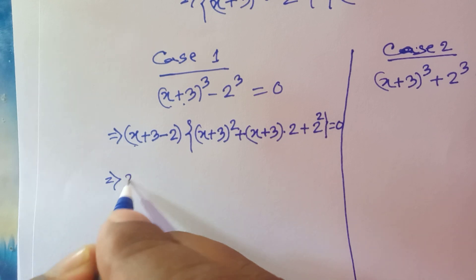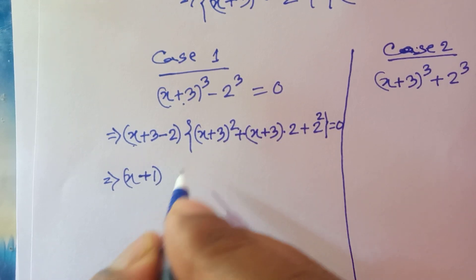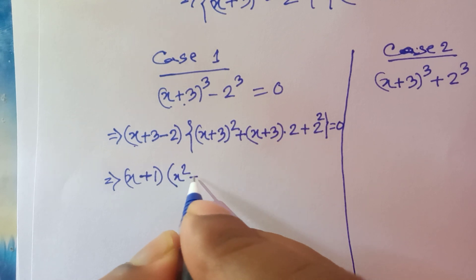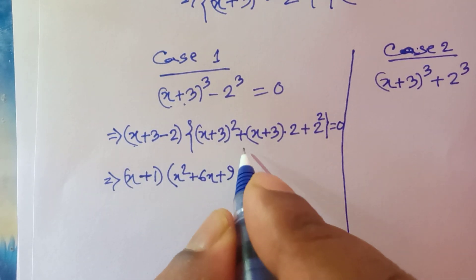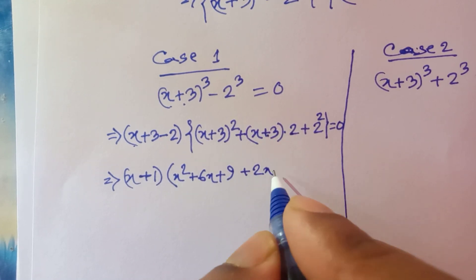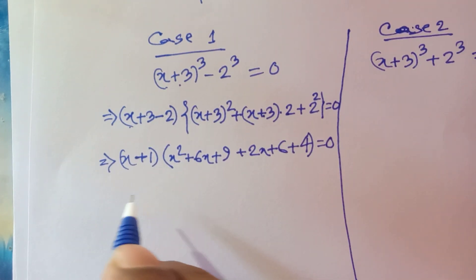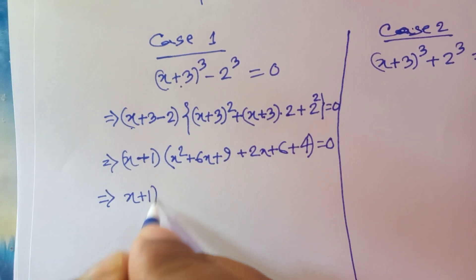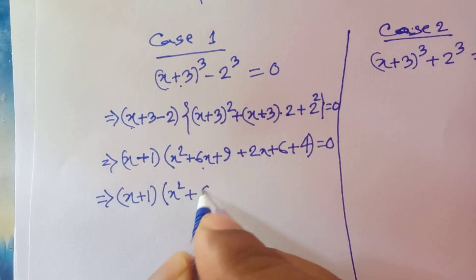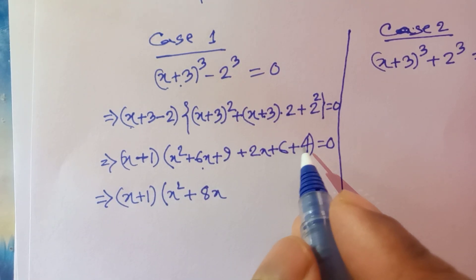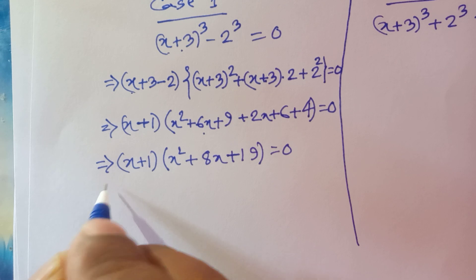So x plus 3 minus 2 gives x plus 1. Expanding using the a plus b whole squared formula: x squared plus 6x plus 9, plus 2x plus 6, plus 4, equals 0. This gives x plus 1 times x squared plus 8x plus 19 is equal to 0.